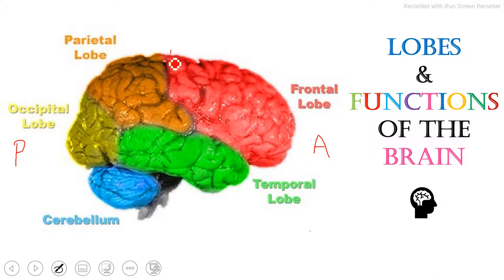First up we have our frontal lobe here. Our frontal lobe is mostly for voluntary movement — this is the main responsibility of the primary cortex and the precentral gyrus. It's also in charge of intellect, orientation, and it contains Broca's area, which is mostly in the left hemisphere, which contains our speech, concentration, personality, temper, judgment, reasoning, and behavior, as well as self-awareness and executive functions.